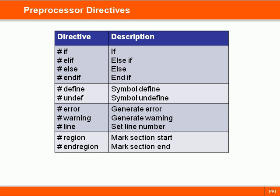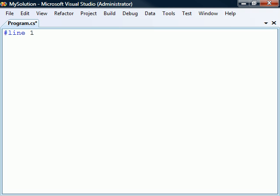C-Sharp includes a set of preprocessor directives that are mainly used for conditional compilation. Although the C-Sharp compiler does not have a separate preprocessor like C or C++ compilers, the directives are processed as if there was one — that is, they appear to be processed before the actual compilation takes place. The preprocessor directives are easily distinguished from normal programming code in that they start with a hash sign.